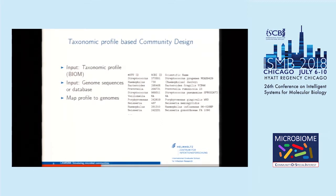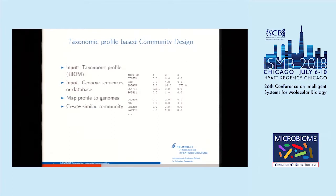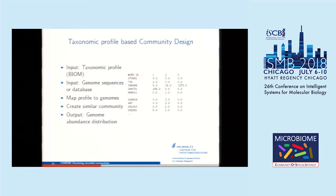In the next step, given the taxonomic classification of your 16S profile, we map these classes to real genomes we have in our database or which you provided to the pipeline. Hopefully most of them will map to some genome. We create a similar community where, instead of just a 16S sequence and taxonomy, you have real genome sequences — complete genomes in the best case — and still the abundances in different samples. We call that output the genome abundance distribution.